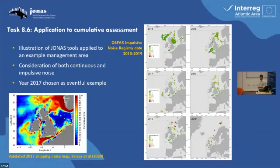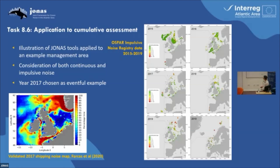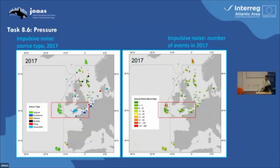This is all OSPAR work. I'm one of the co-conveners of the ICG noise, leading on the impulsive noise work. We've been monitoring this since 2015. With this 2017 map of shipping noise, we decided to look at 2017 in terms of impulsive noise as well — it happened to be a more interesting year. There was some seismic survey off of Ireland and some activity off of Portugal and Spain, so quite a bit of activity in the Atlantic area. We created this arbitrary management area just to illustrate, covering seismic surveys in Irish waters, some Navy activity, and some explosions off French coastal waters.